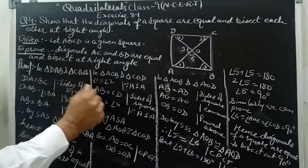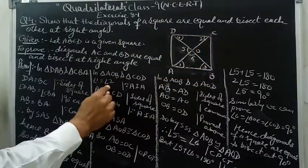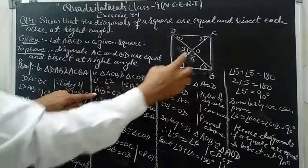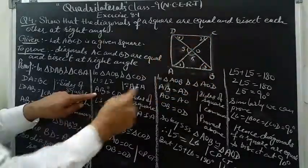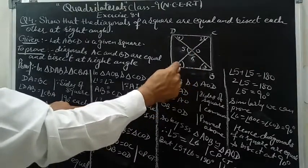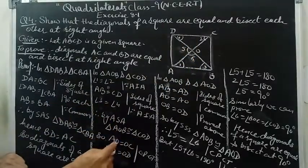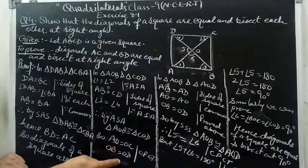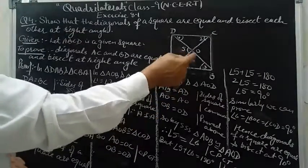For Part 2, in triangles AOB and COD — angle 1 equals angle 2 as alternate interior angles; AB equals CD as sides of the square are equal; angle 3 equals angle 4 as alternate interior angles. By ASA, the triangles are congruent. Hence AO equals OC and OB equals OD by CPCT, and the diagonals bisect each other.